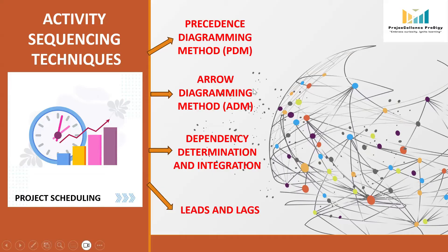Normally, there are four types of sequencing techniques which are commonly used in project scheduling: first is the Precedence Diagramming Method, second is the Arrow Diagramming Method, third is Dependency Determination and Integration, and fourth is Leads and Lags. Let's discuss each one of them in detail.